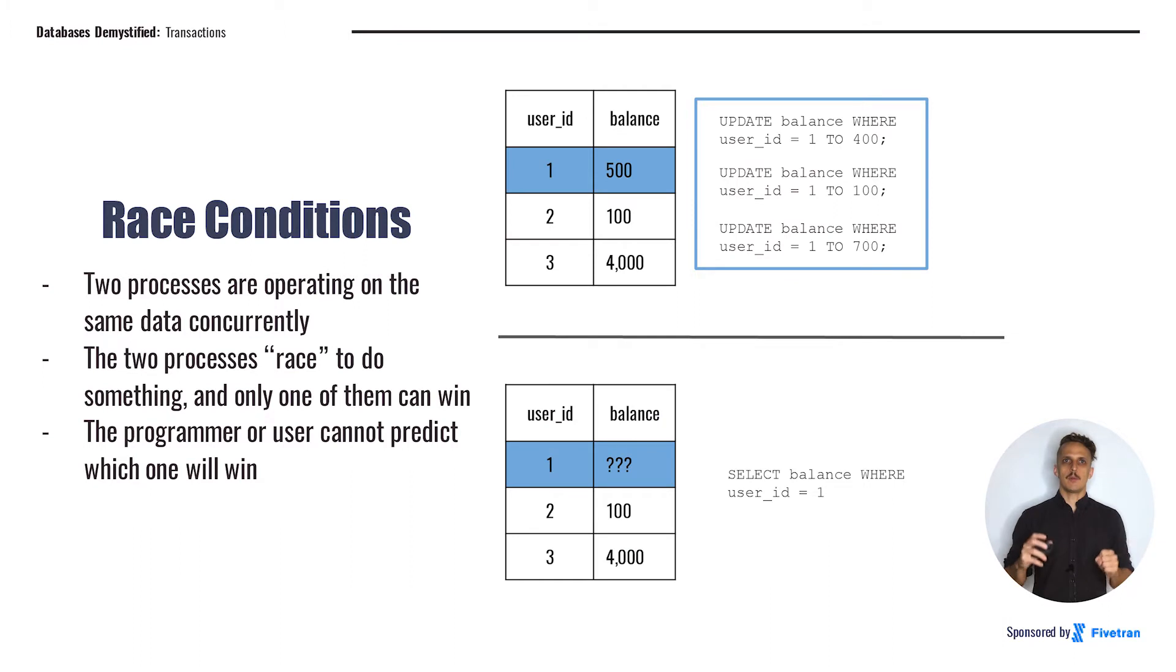So in this example, we have three processes on the right, where we're trying to update the balance to different values all at the same time. We can imagine that these were processes kicked off by three different computers in three different branch locations, all simultaneously, and here we have a race condition. The problem is that we might not know at the end of these three processes what the value will be for row one.